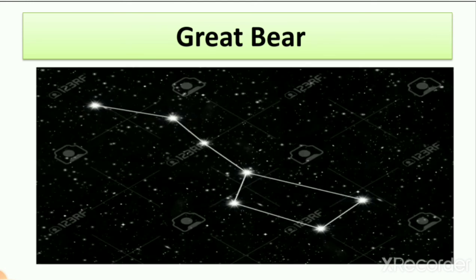One pattern we learn about is the Great Bear. The Great Bear is a pattern visible in the sky formed by stars. Here you can see this pattern — it is known as the Great Bear and also as the 7-star pattern. When you count the stars you can count 1, 2, 3, 4, 5, 6, 7. This is what we learn in this lesson.